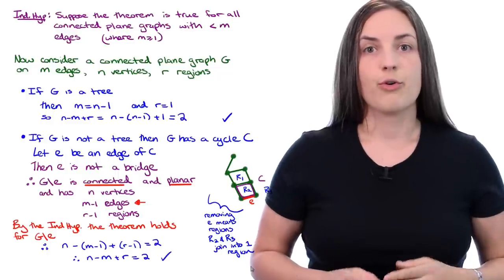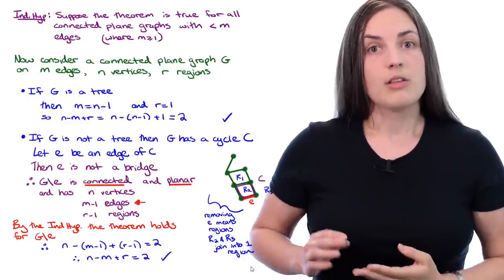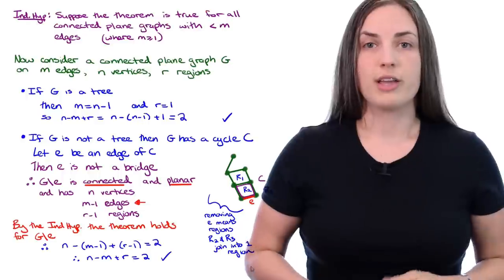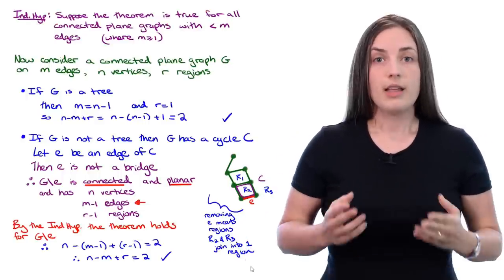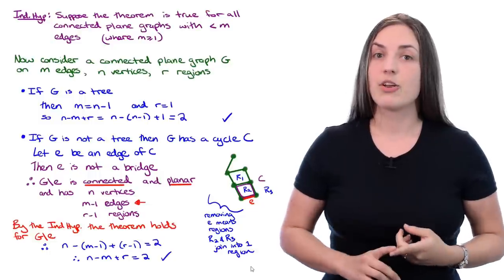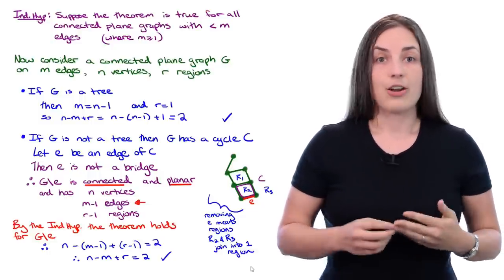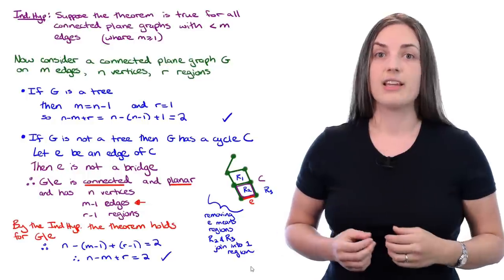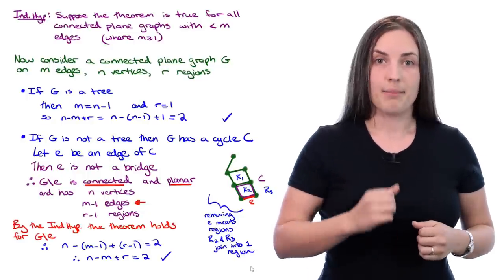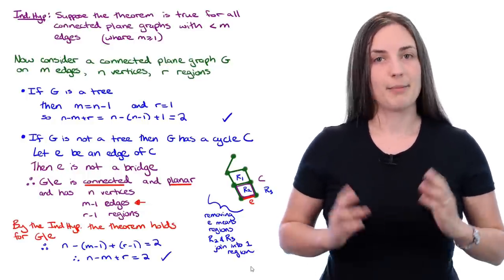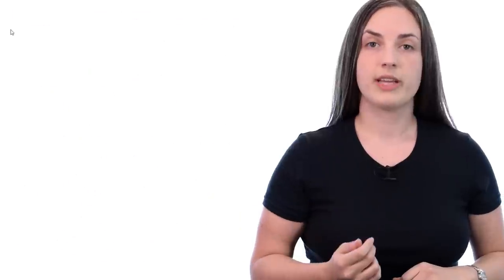So we know that N minus (M minus one) plus (R minus one) must equal two by the inductive hypothesis. If you simplify that, you'll see that N minus M plus R equals two. Therefore, by the principle of mathematical induction, the theorem holds for all values of M greater than or equal to zero, and the proof is done.